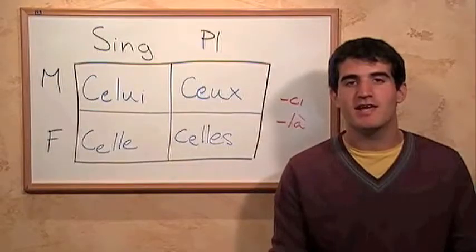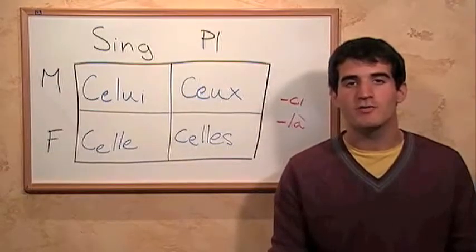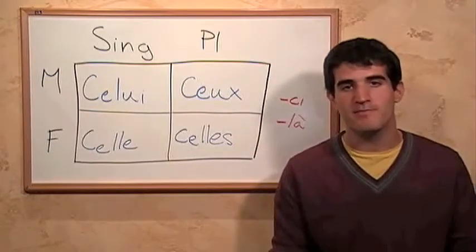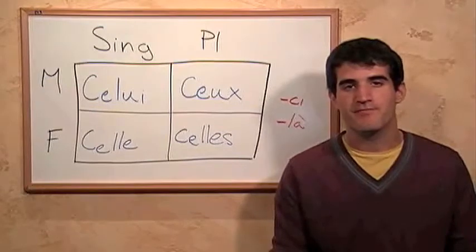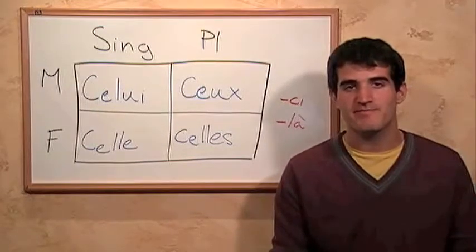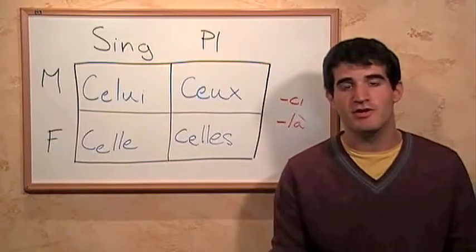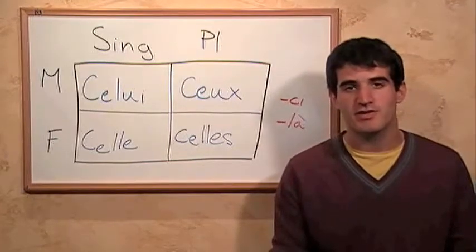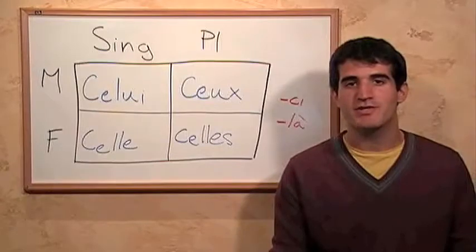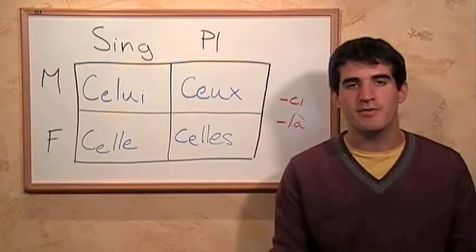So we can say 'this book,' or to be shorter, we can say 'this one.' Now, this is different from English, where we can just say 'this' — like, 'this book is good' becomes just 'this is good.' But in French, we can't do that. We have to have two different systems for both.